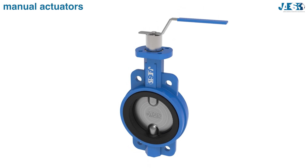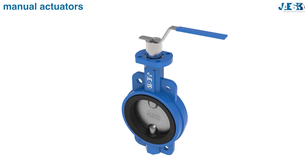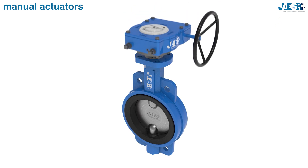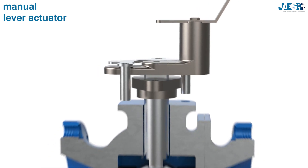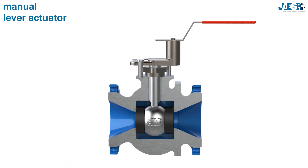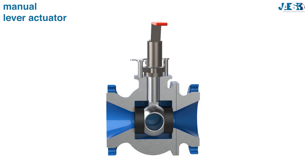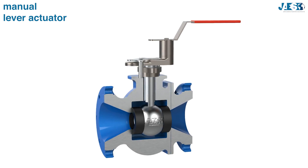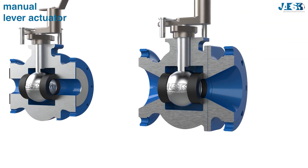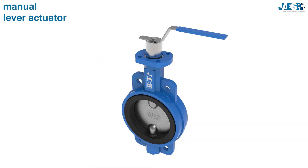Manual actuators use human energy as the source of energy, as they are controlled by an operator who manually intervenes on the shutter through a lever or hand-wheel actuator. The lever actuator is the simplest model, connected directly to the stem. It is usually used for fast rotary motion valves, where with a quarter turn — 90 degrees — it opens or closes the disk. It is therefore mainly used in ball, plug, and butterfly valves.